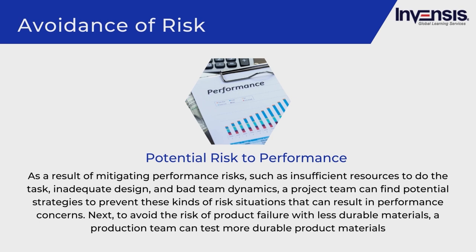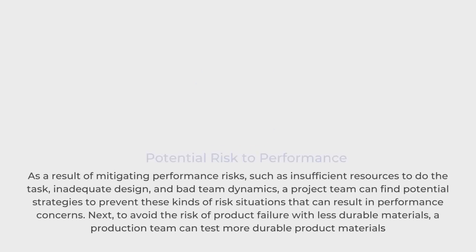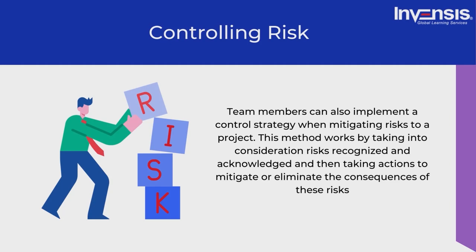The third risk mitigation strategy is controlling risk. Team members can implement a control strategy by taking into consideration recognized and acknowledged risks, then taking actions to mitigate or eliminate their consequences. Some examples demonstrate how control measures can be used for risk mitigation.